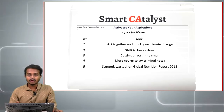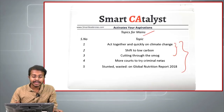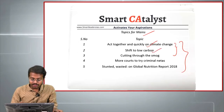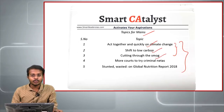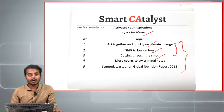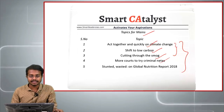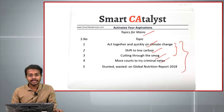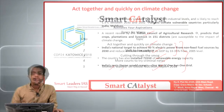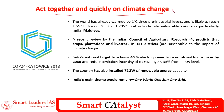We are done with the prelims for today. Now we shall see the topics for mains. There are five topics, but three pertain to climate change: 'Act Together and Quickly on Climate Change,' 'Shift to Low Carbon,' and 'Cutting Through the Smog,' which relates to stubble burning and increasing air pollution. The fourth is about more courts to try criminal cases, speaking to judicial pendency. The fifth is India's state on global nutrition, especially stunting and wasting.